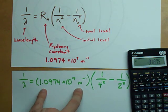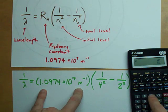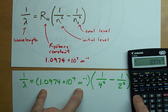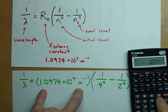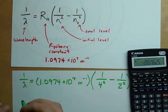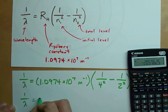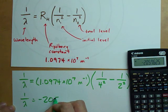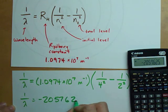I have to multiply that by this, times 1.0975 times 10 to the power of... oh positive 7, positive 7. I end up with negative 2057625.